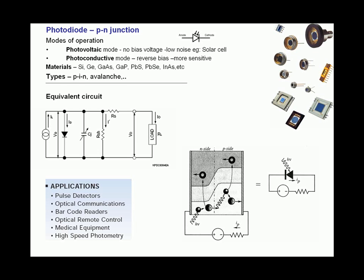If there is no bias voltage, this mode is known as photovoltaic mode and it has relatively low noise. A very good example is a solar cell, which is just an array of photodiodes.